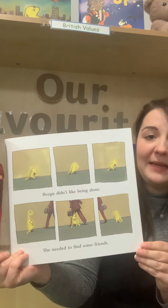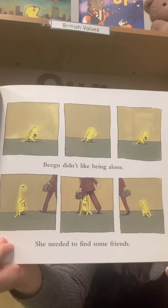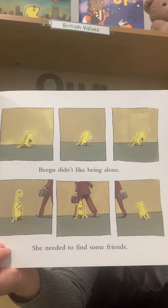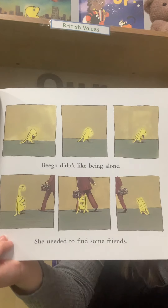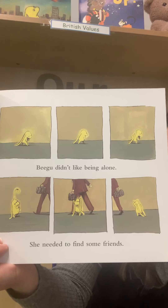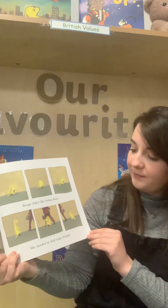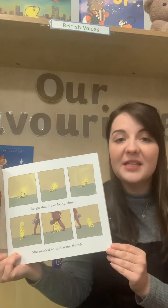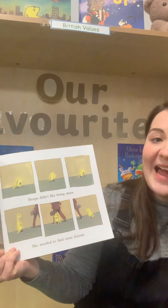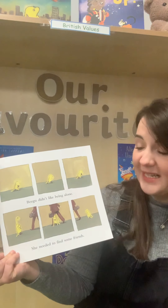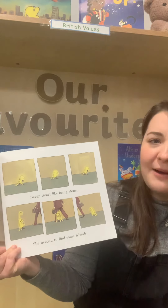Beegoo didn't like being alone. She needed to find some friends. You can see she's trying to get this man's attention, but he doesn't seem to be paying her much attention. How do you think Beegoo is feeling now? I wonder if Beegoo will find any friends? Where do you think she might find some friends, and how is she going to make friends? It's going to be tricky because she doesn't speak the same language.